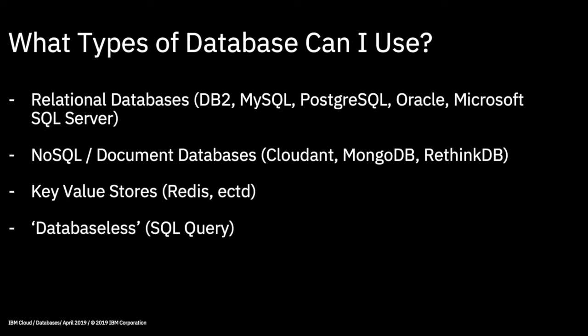Then we have key-value stores, and these are typically incredibly fast stores which simply hold a record identifier — the key — and then a value or array of values against that key. They are often described as in-memory databases but they can also use disk storage. Each key can hold a completely unique record structure. Typical use cases for key-value stores are holding session state information for user sessions on a website, as well as things like shopping baskets where users add items. Popular key-value stores on IBM Cloud are Redis and ETCD.